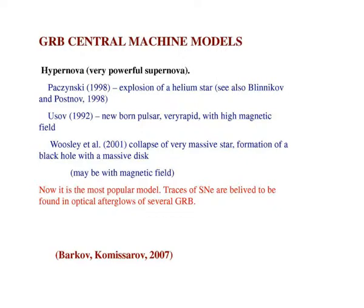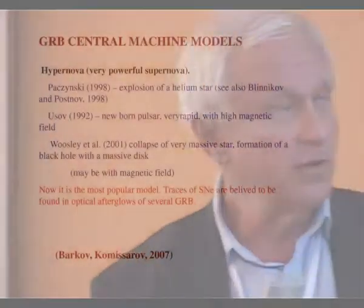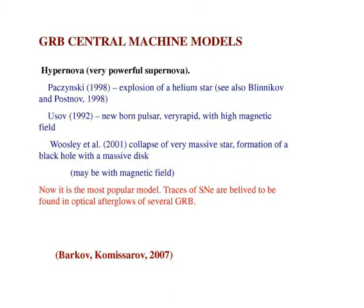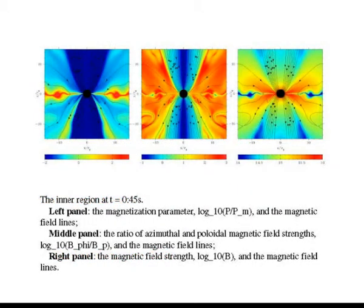This model is related to Woosley and co-authors, who considered formation of a black hole — a massive black hole surrounded by a magnetized accretion disk. Gamma-ray bursts are connected with processes inside this disk and the falling of the disk into the black hole. This model is now the most popular. Calculations were done by Barkov and Komissarov. In this picture, the accretion disk and black hole undergo differential rotation, increasing the magnetic field and launching a collimated jet connected with gamma-ray bursts. If it is not collimated, it would require enormous energy — exceeding the rest mass energy of the sun several times — which is absolutely impossible.